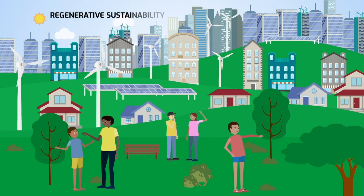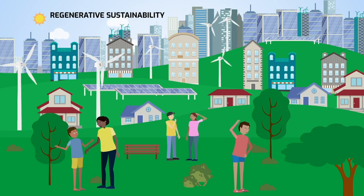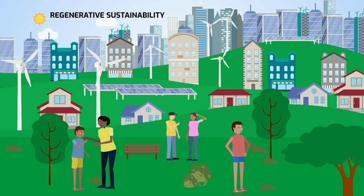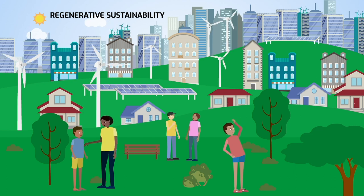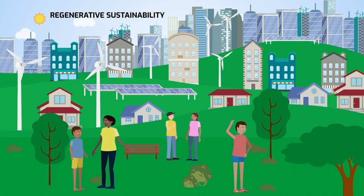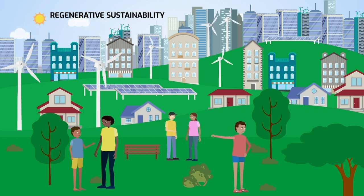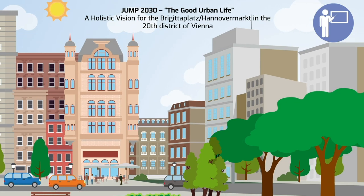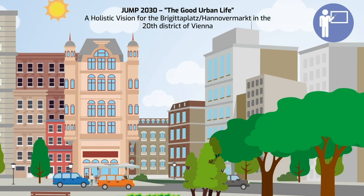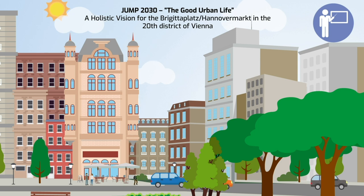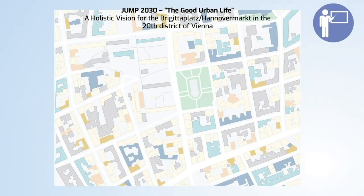The WG5 Regenerative Implementation Guidelines offer scale-jumping strategies to achieve regenerative sustainability for neighborhoods and cities. The Vienna Training School helped move ideas from research into practice by implementing practical solutions for a specific location.